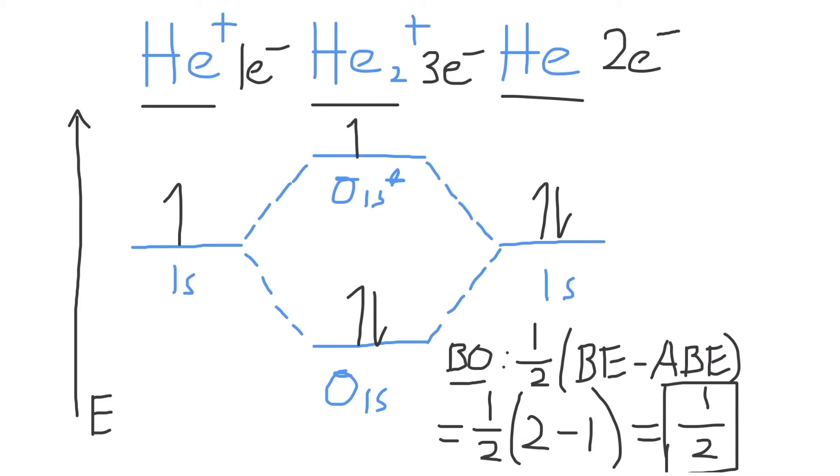Therefore, we know that there is one-half of an electron pair present in a bond in the He2+ molecule, which is equivalent to one electron, as we know a full electron pair has two electrons present.